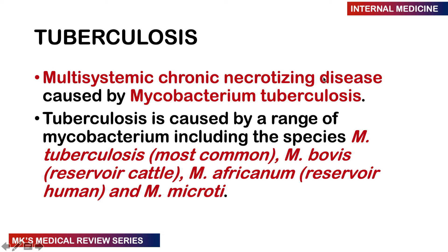This is going to be a multisystemic infection causing a type of chronic necrotizing disease. The type of necrosis we often see with TB is a special type known as caseous necrosis, meaning it appears like cheese. It's going to be caused by Mycobacterium tuberculosis, though there are different species that can cause TB. Mycobacterium bovis occurs in someone who drinks unpasteurized milk directly from the cow.